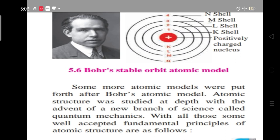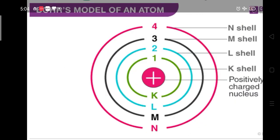Neil Bohr further put forth the Bohr's atomic model, and atomic structure was studied in depth with the advent of quantum mechanics and quantum theory. With those fundamental principles of atomic structure, we can see the detail of Bohr's atomic model. In the model diagram you will see a plus sign at the middle representing the positively charged nucleus, and electrons present in orbits around it. There are four orbital shells given in the picture.